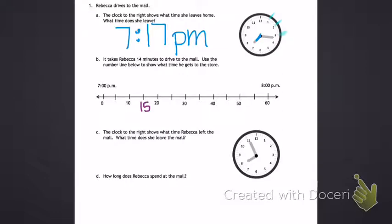If I continue writing 15, 16, 17, this is when Rebecca leaves for the mall. It takes her 14 minutes to go, so I'm going to count.